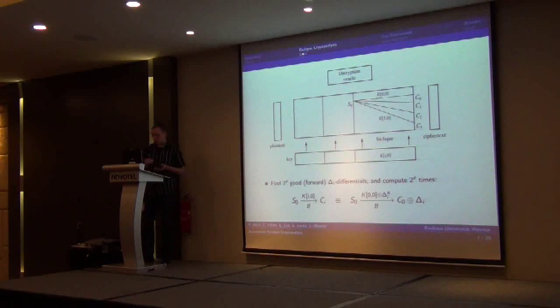Then the first view has to find 2 to the d good forward or delta differentials and compute for any so derived new key 2 to the d times in forward direction, and if it's a good cipher, one will expect to arrive at different ciphertext states.